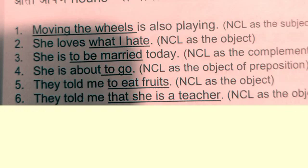Now look at these six sentences. In 'Moving the wheels is also playing,' 'moving the wheels' is a noun clause functioning as the subject. In 'She loves what I hate,' 'what I hate' is a noun clause functioning as the object. In 'She is to be married today,' 'to be married today' is a noun clause functioning as the complement. 'To go' in 'She is about to go' is a noun clause functioning as object of preposition. 'To eat fruits' in 'They told me to eat fruits' functions as the object, and 'that she is a teacher' in 'They told me that she is a teacher' functions as the direct object.